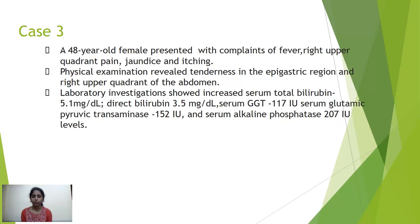Coming to the third case, a 48-year-old female presented with fever, right upper quadrant pain, jaundice, and pruritus. Physical examination revealed tenderness in the epigastric region and right upper quadrant. Laboratory investigations showed deranged liver enzymes: serum total bilirubin 5.1 mg/dL, direct bilirubin 3.5 mg/dL, serum GGT 117 IU, SGPT 152 IU, and serum alkaline phosphatase 207 IU.